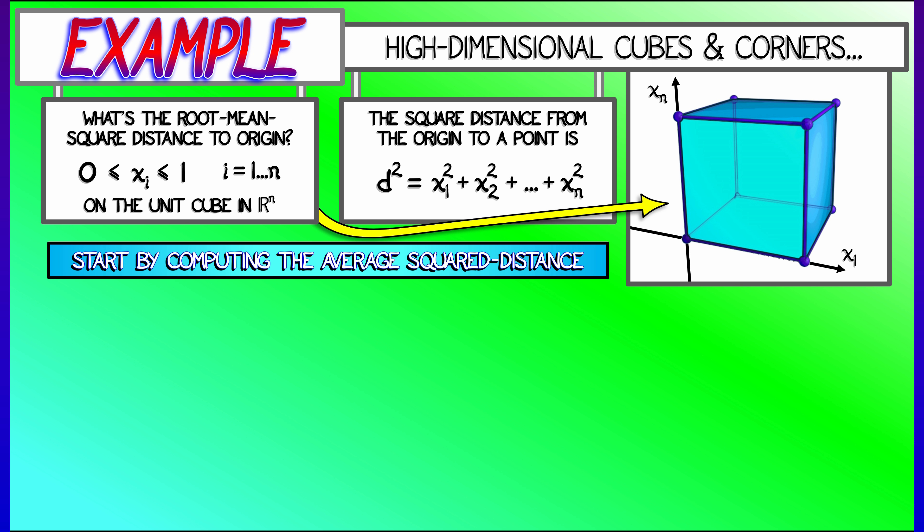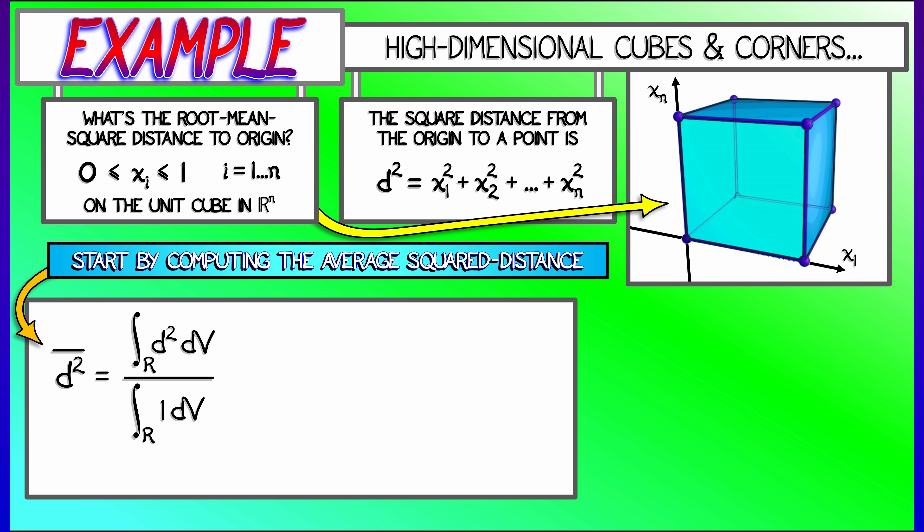And then I take the average of that distance squared function. That is going to be, according to our formula, the integral of d squared divided by the integral of 1. Now, that integral down on the bottom is really simple. It's just the n-dimensional volume of the unit n-dimensional cube. That's equal to 1.